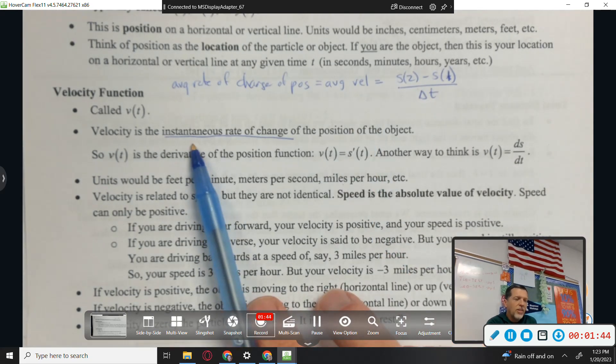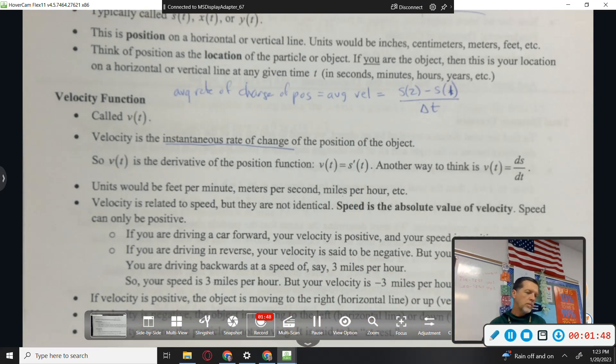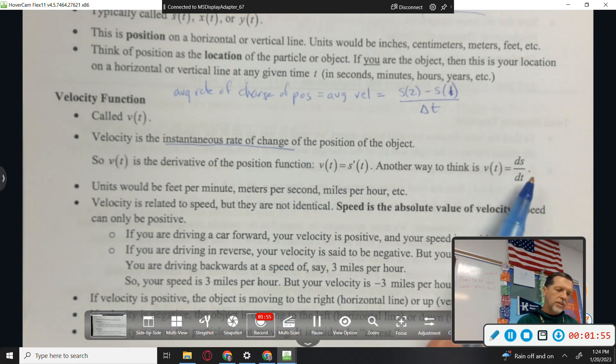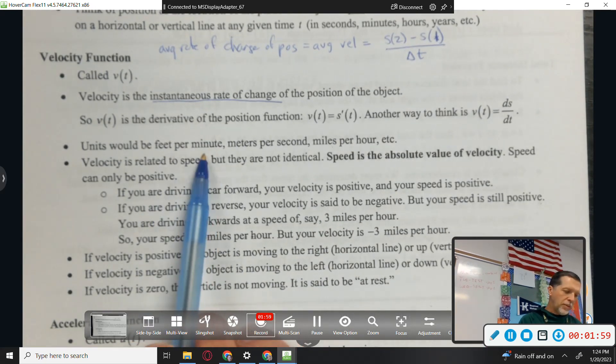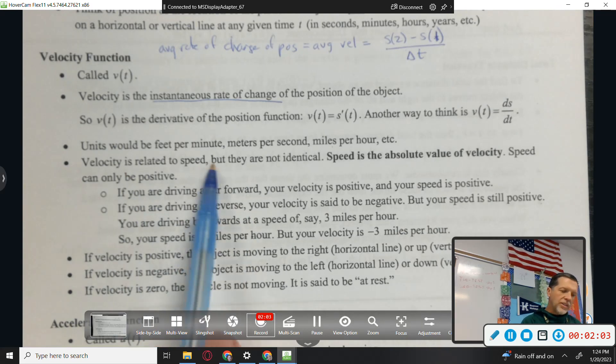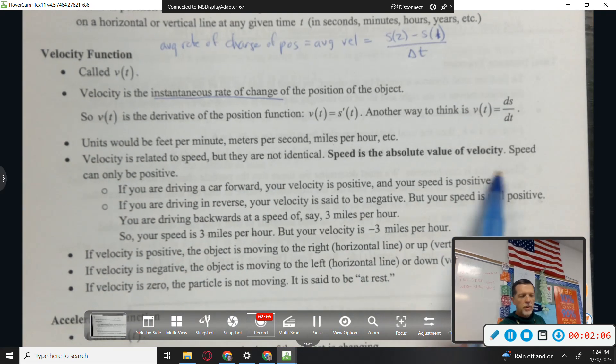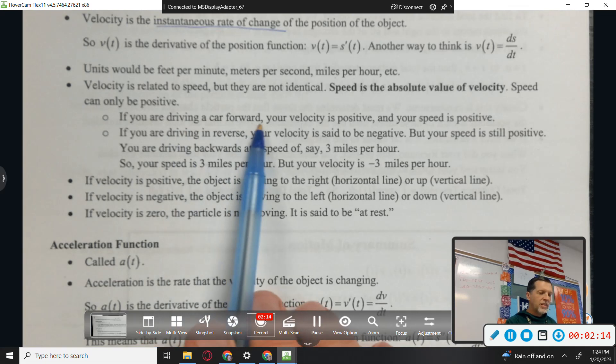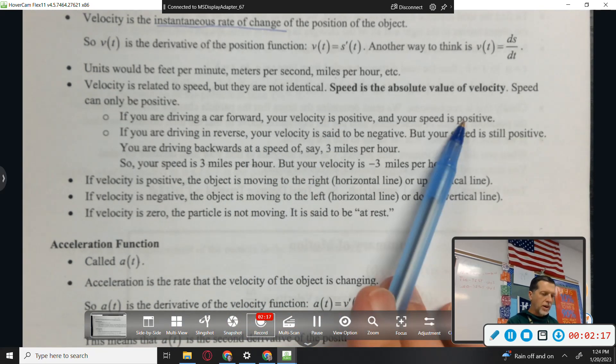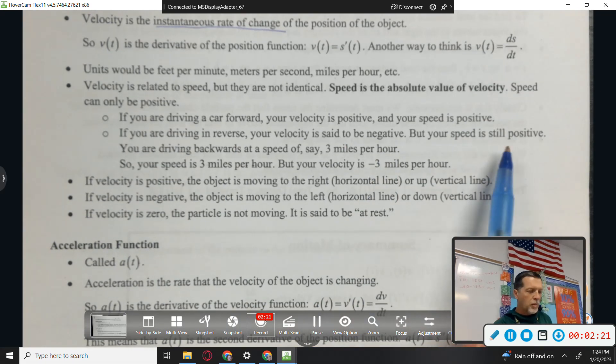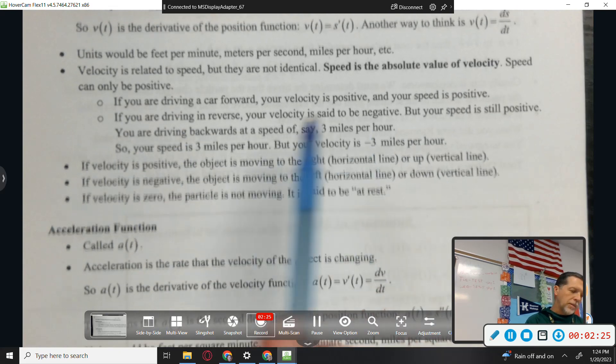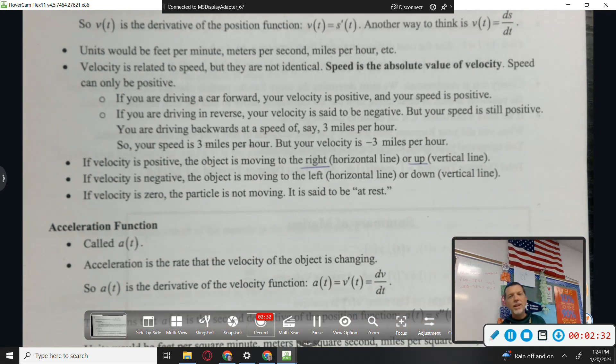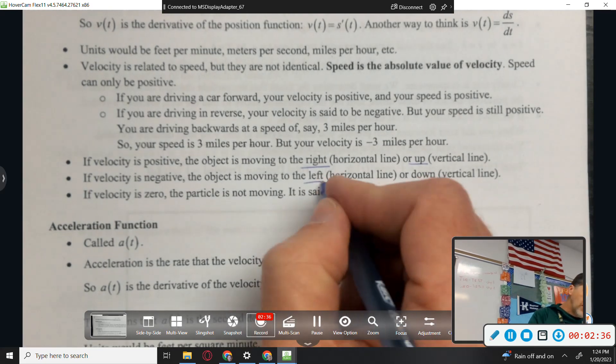That's not instantaneous velocity. That's algebra slope, not calculus slope. Calculus slope V is the derivative of the position function, S prime or dS/dt. Units of velocity are feet per minute, meters per second, and so on. Velocity is related to speed, but they're not the same. Speed is the absolute value of velocity. Speed can only be positive. If you're driving a car forward, your velocity is positive. If you're driving in reverse, your velocity is negative, but your speed is still positive.